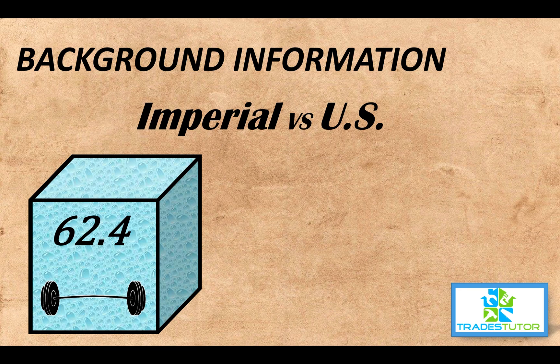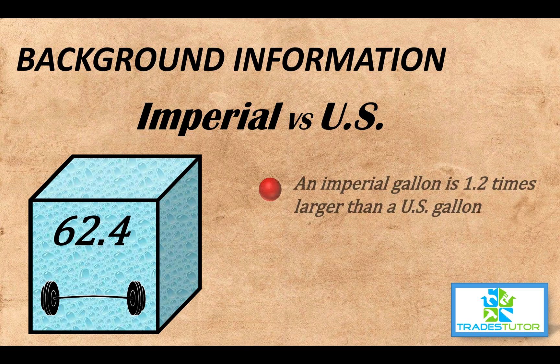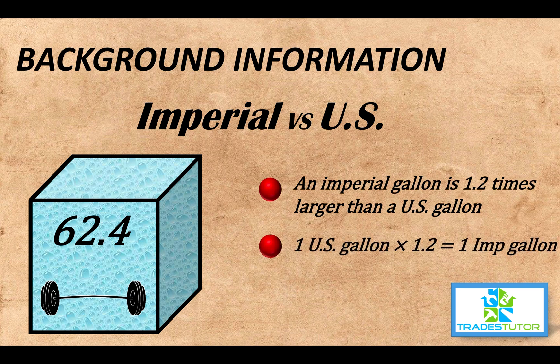A couple more things — let's relate imperial to U.S. An imperial gallon is larger than a U.S. gallon. In fact, it's 1.2 times larger, or 20% larger. So if you take one U.S. gallon and multiply by 1.2, you get one imperial gallon. And going back to our figures: 6.24 times 1.2 equals 7.48. It all lines up.